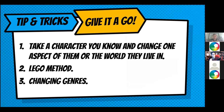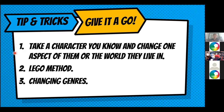Instead of Goldilocks being a kid running into a stranger's home, now we have an astronaut — who may or may not be a good person — who comes across what might be her salvation because she was drifting in space. Her only chance of survival is to steal food and technology from this space ark. That creates a whole new character just by doing that. So the three things: change one aspect, the Lego method, and changing genres.